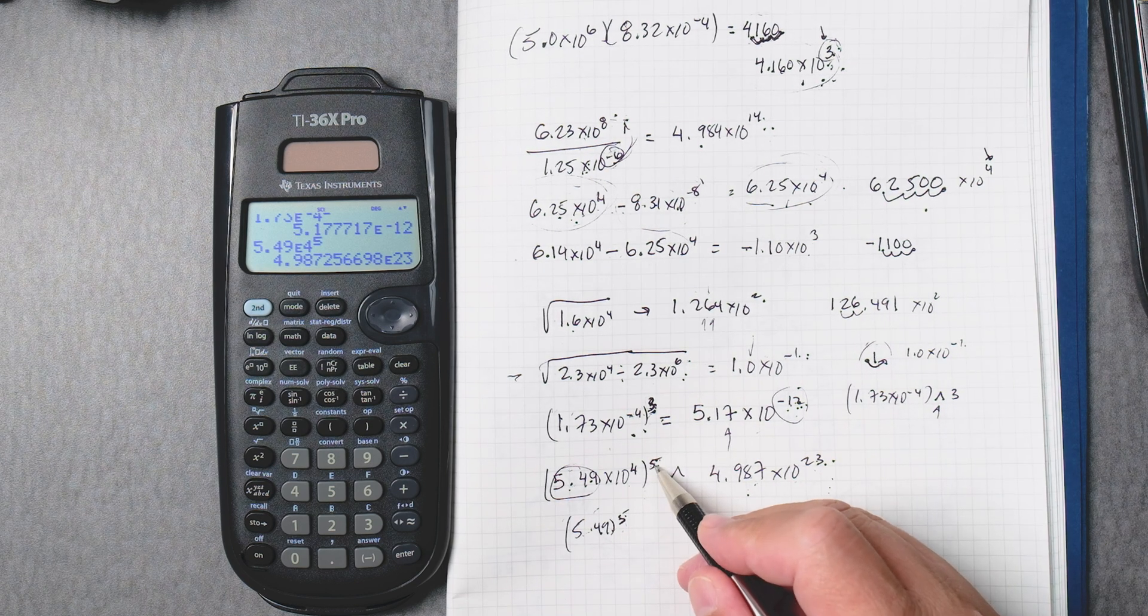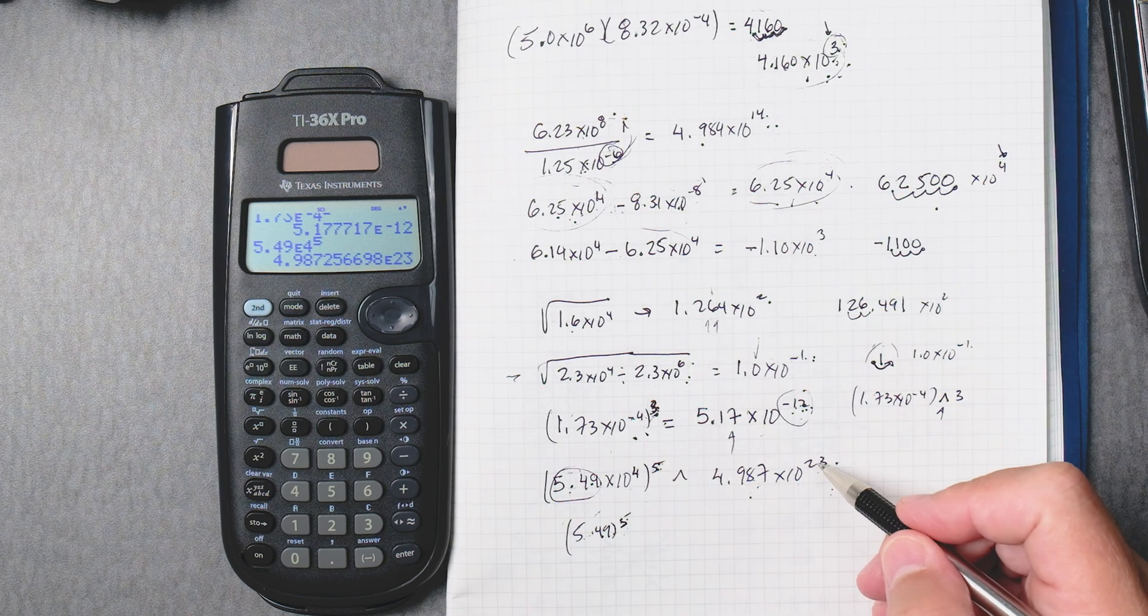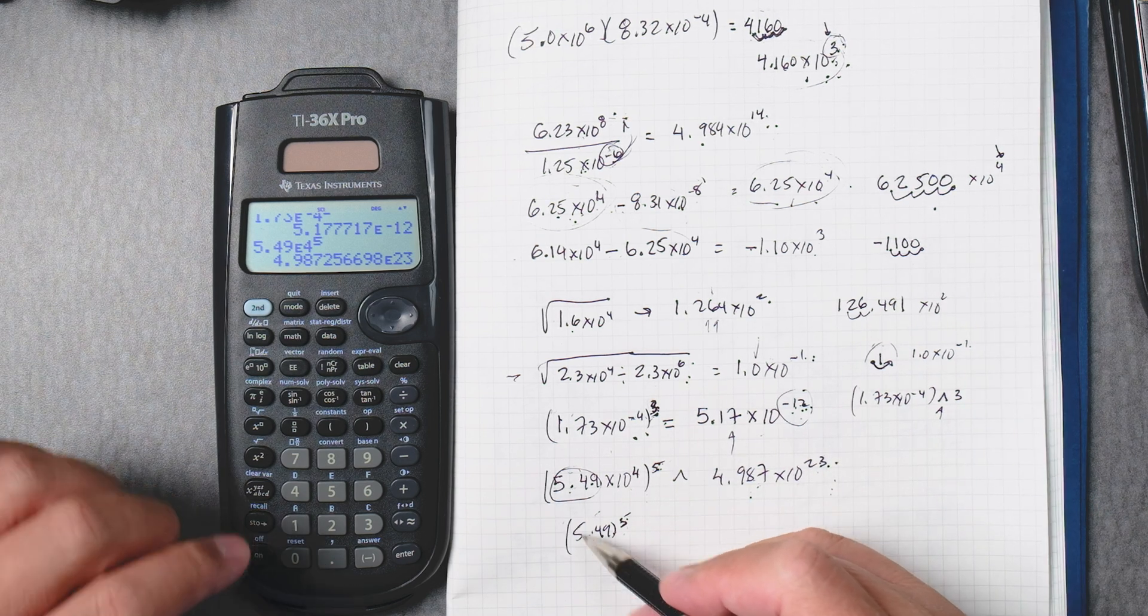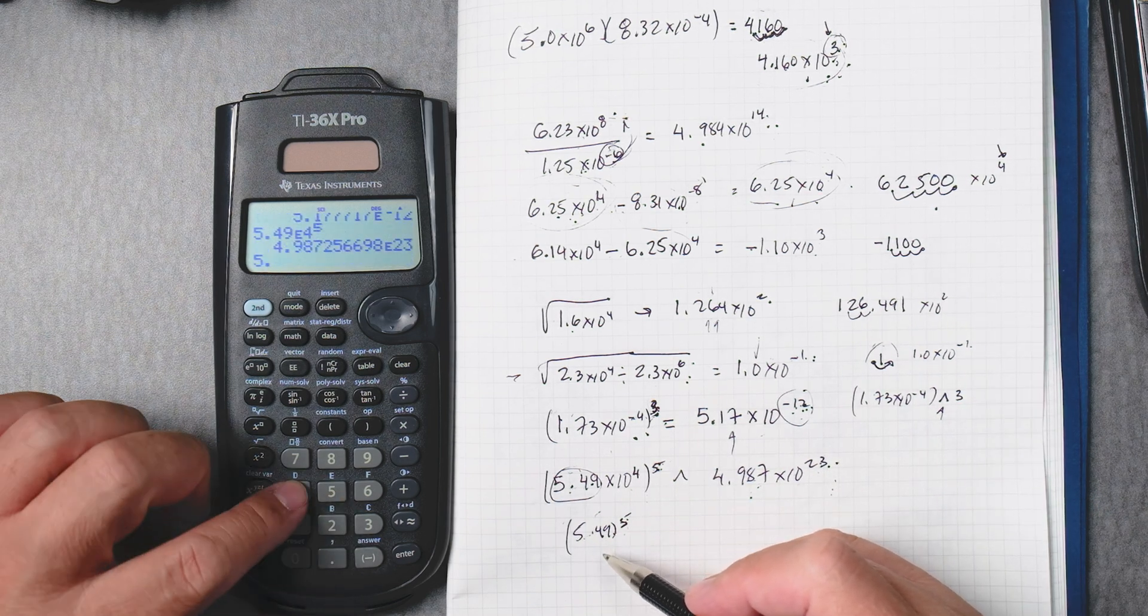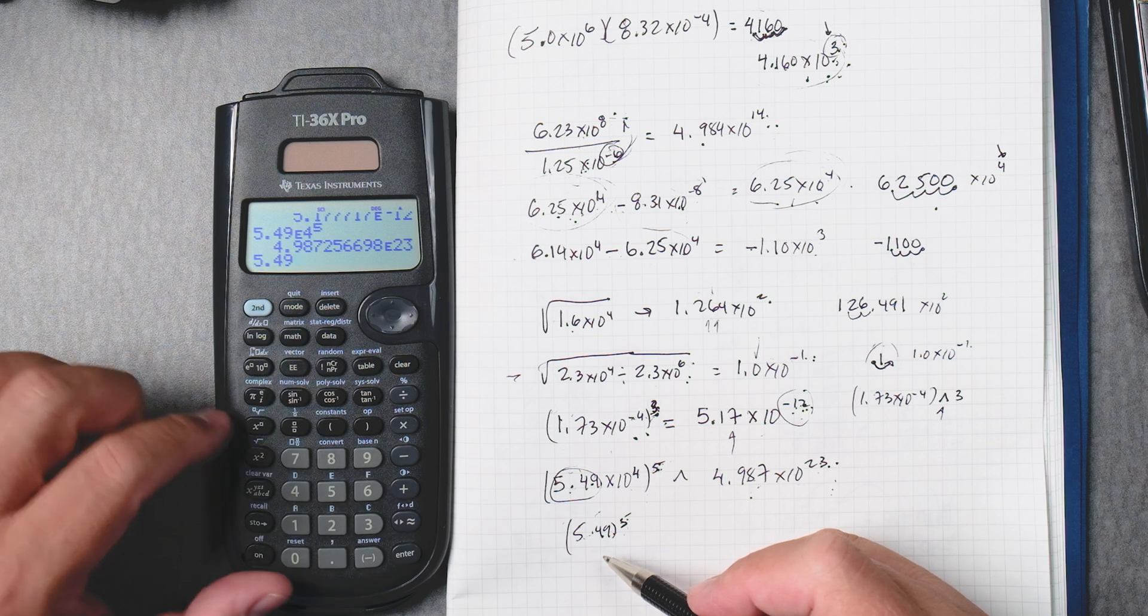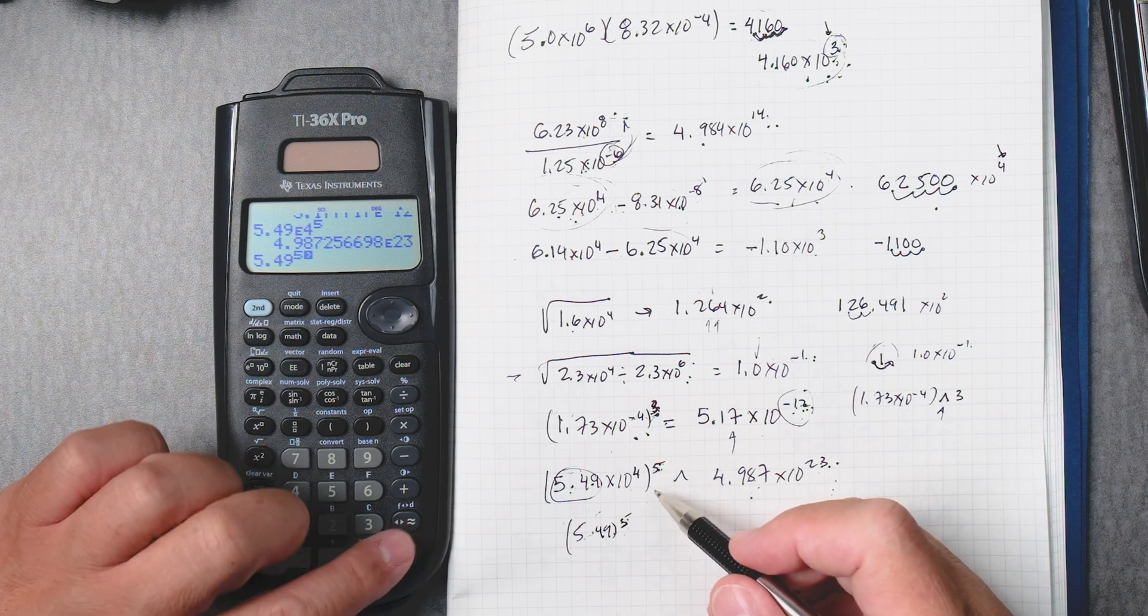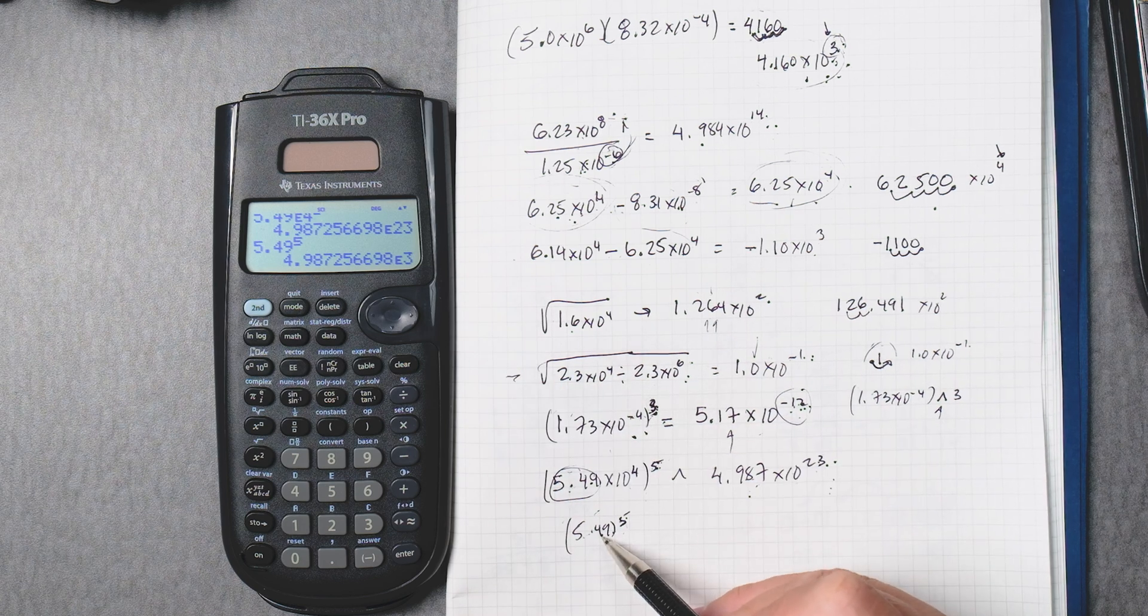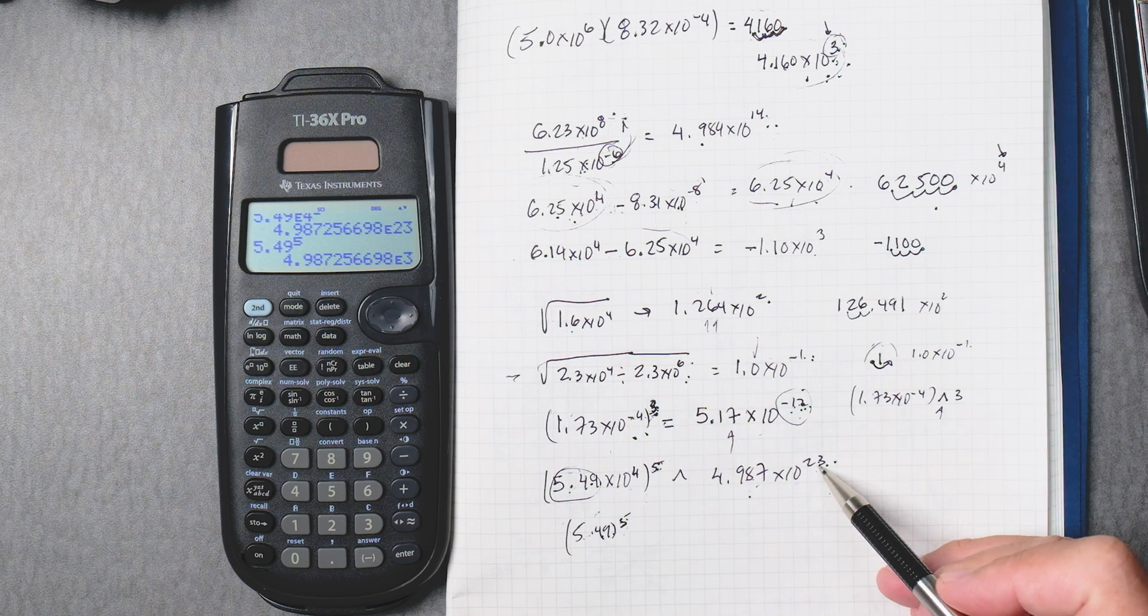4 times 5 does give me 20, but not 23. How come? Well, 5.49 to the power of 5 gives me 3 more places to deal with. So, 20 plus 3 is 23.